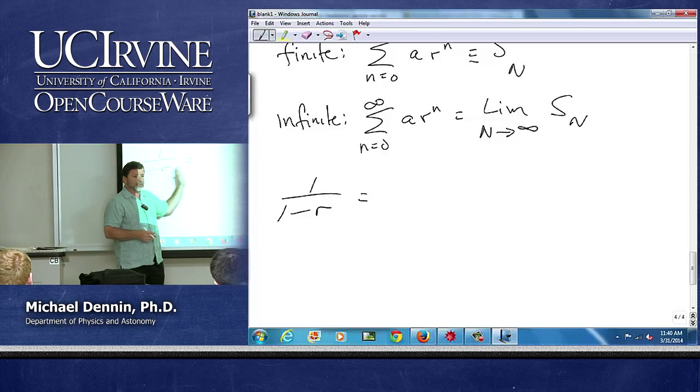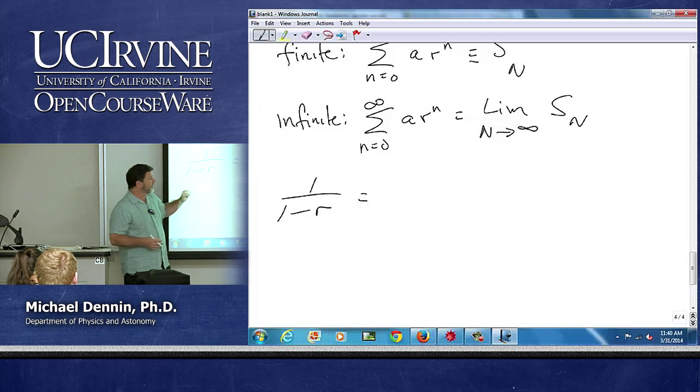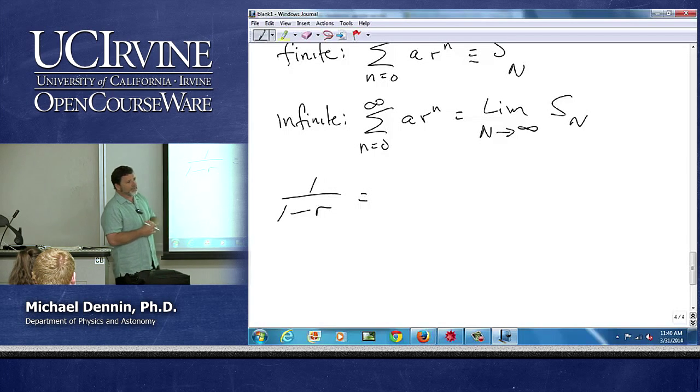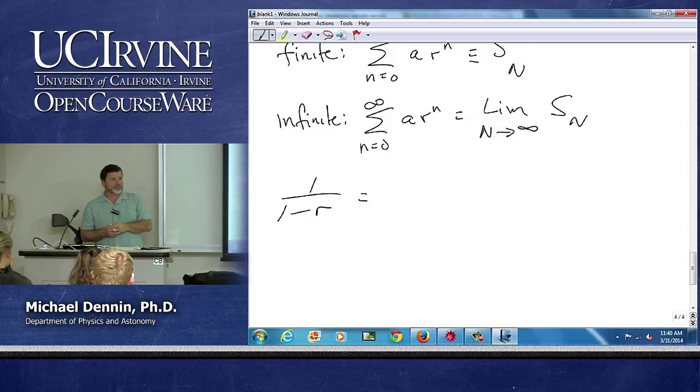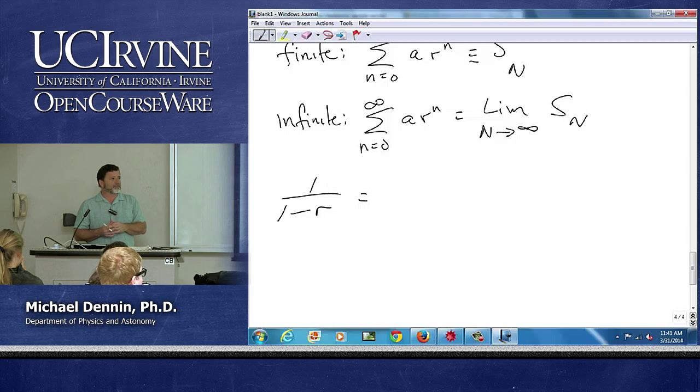We'll review Taylor series in the next lecture, but some of you may remember this. What is the Taylor series for one over one minus r? Can you get the first two terms? If I write it as one minus r to the minus one.